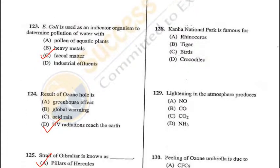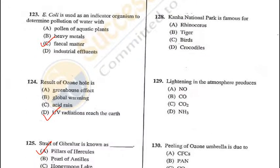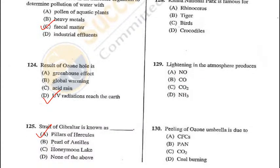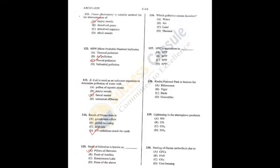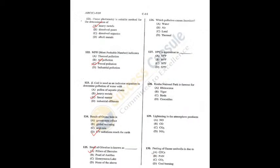Question 129: Lightning in the atmosphere produces nitric oxide — A is the correct answer. Question 130: Peeling of the ozone umbrella (depletion of the ozone layer) is due to chlorofluorocarbons (CFCs) — A is the answer. These questions are very easy and are always repeated in various exams.